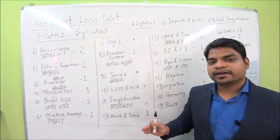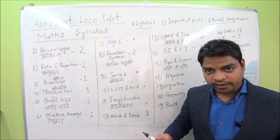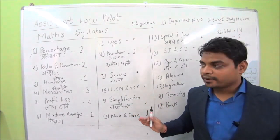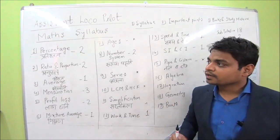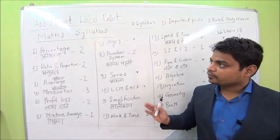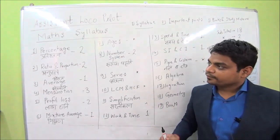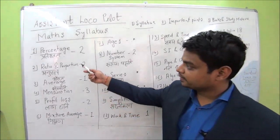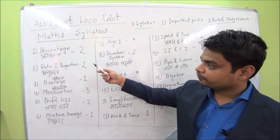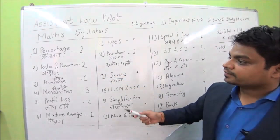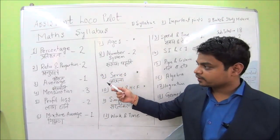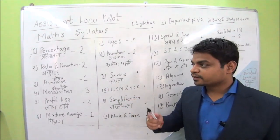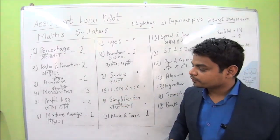It is possible that where I say 3 questions come from a topic, maybe 2 come or maybe 4 come, but broadly we will understand which topic is how important and how to prepare for it. The first topic in math is percentage, from which you get 2 questions. Second is ratio and proportion, from which questions on ratios and coins come — many questions are formed in ratio and proportion.